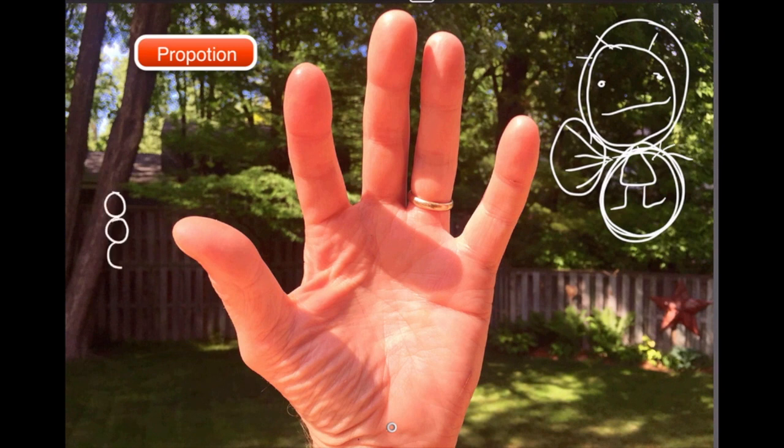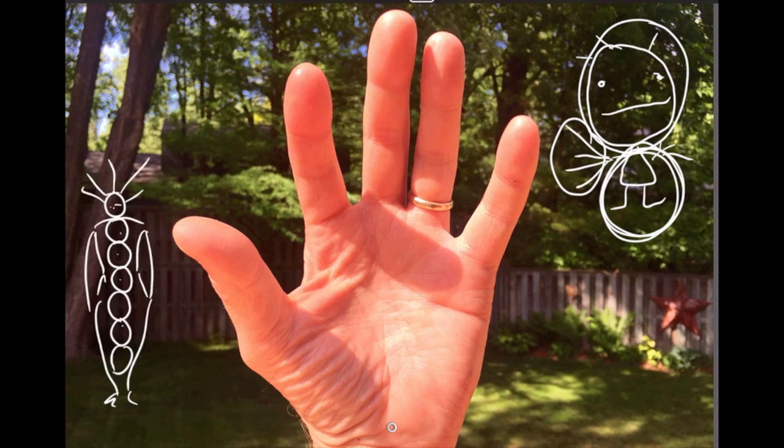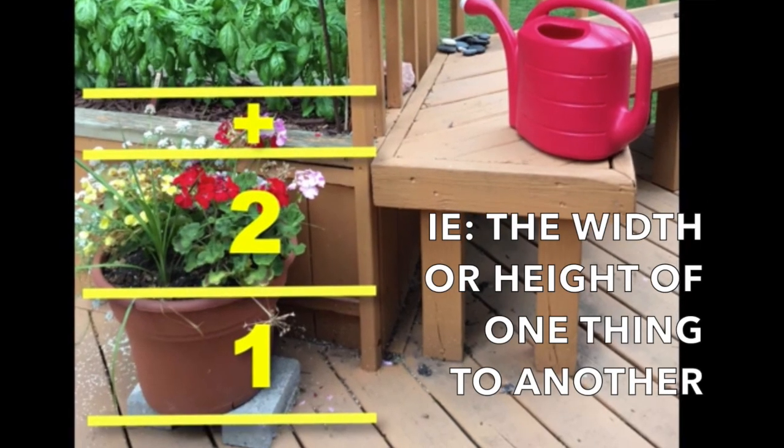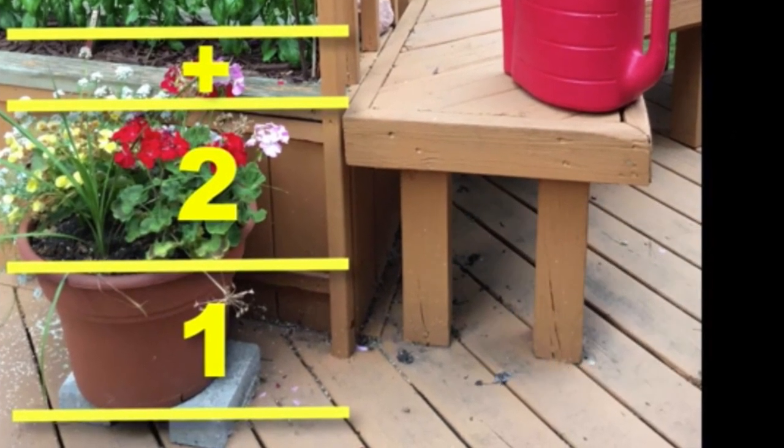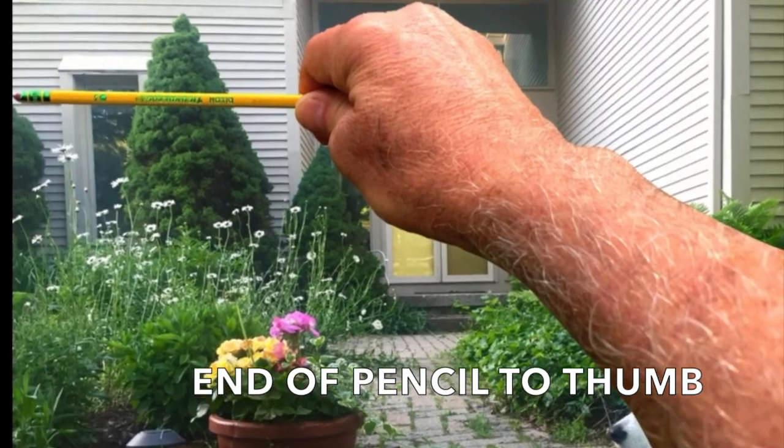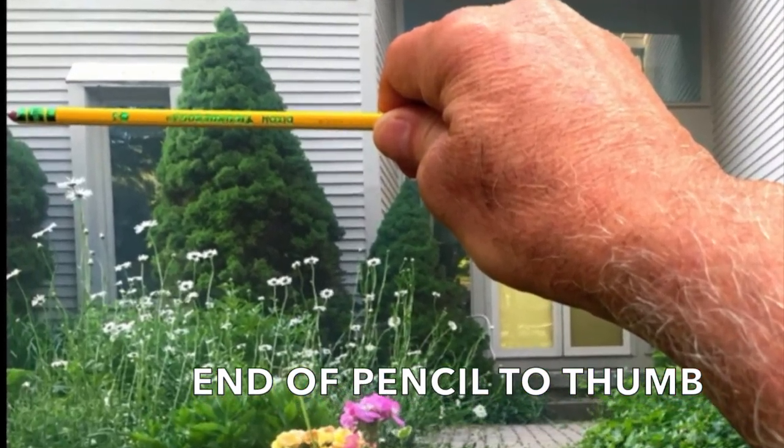A person is, I think it's seven and a half heads tall. And what proportion means is how one element relates to another element or to other elements in the drawing. And the way you do that is by measuring different things using your pencil.